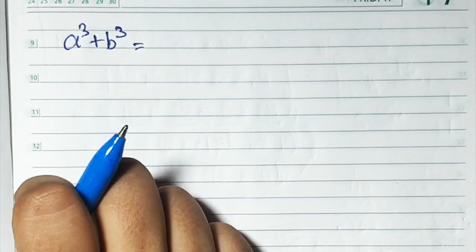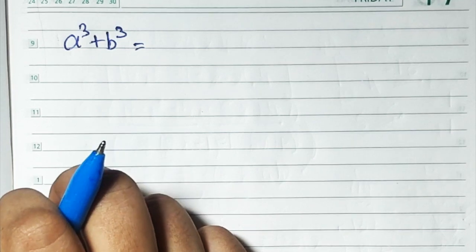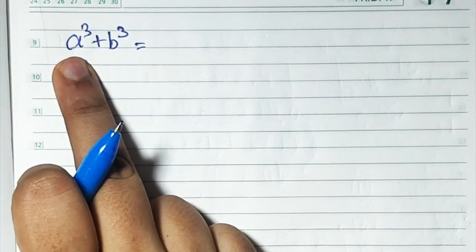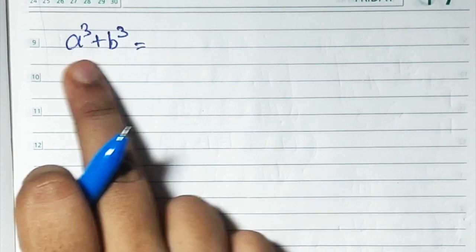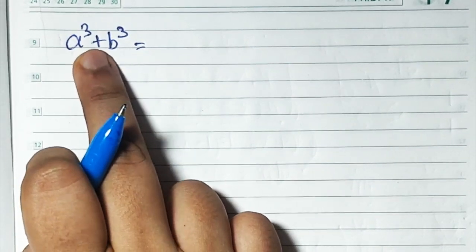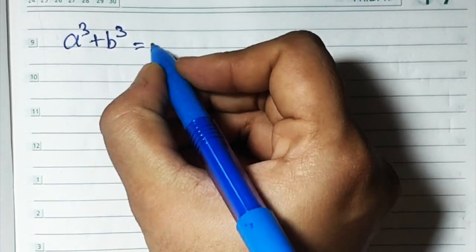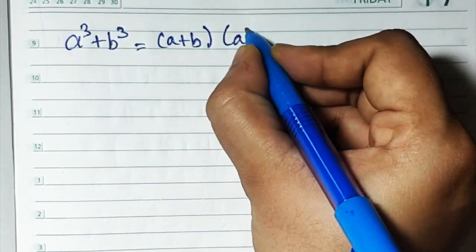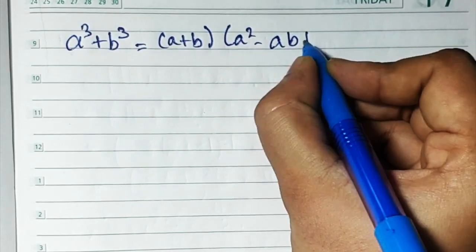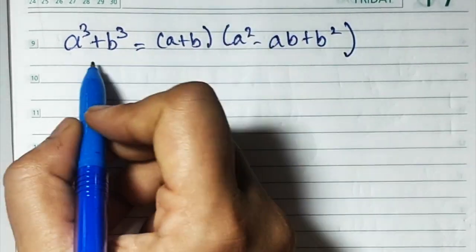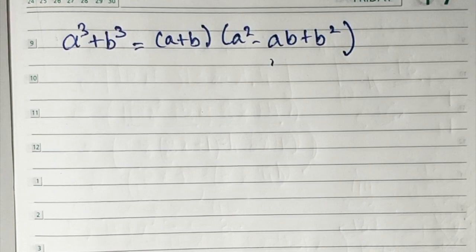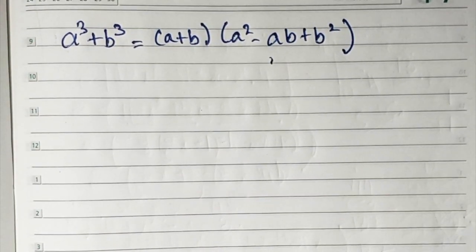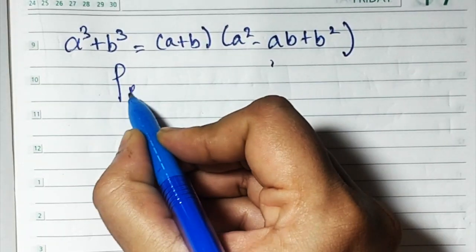In this chapter on Factorization of Algebraic Expressions, the second part, we are going to learn how to solve sums — how to factorize sums in this format. Let me learn this formula first: a cube plus b cube is equal to a plus b, times a square minus ab plus b square. Using this formula, we are going to solve sums from practice set 6.2.